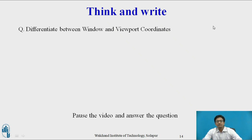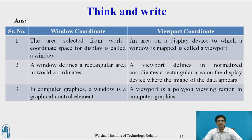Think and write: pause the video and answer this question — differentiate between window and viewport coordinates. The area selected from world coordinate space for display is called the window, and an area on the display device to which the window is mapped is called the viewport.